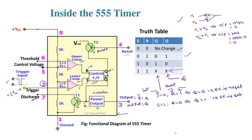The discharge pin is used along with a capacitor — we connect a capacitor to charge or discharge it using this discharge pin. There is also a threshold voltage applied through an RC network. If this voltage is greater than 2/3 VCC, R becomes 1 and the flip-flop will be reset.